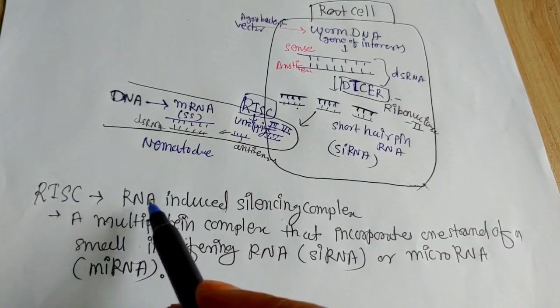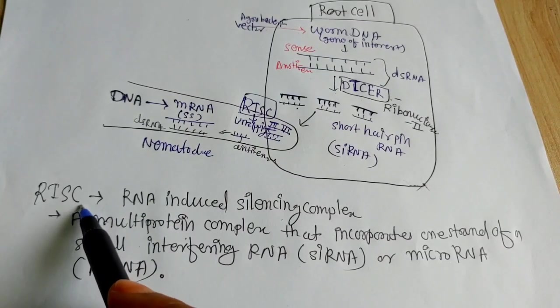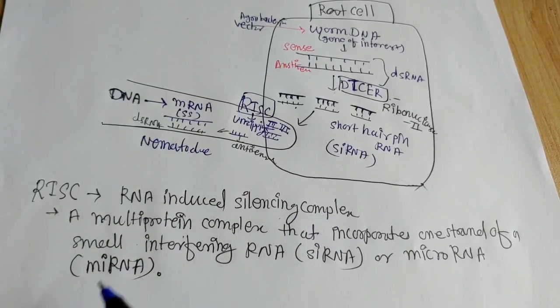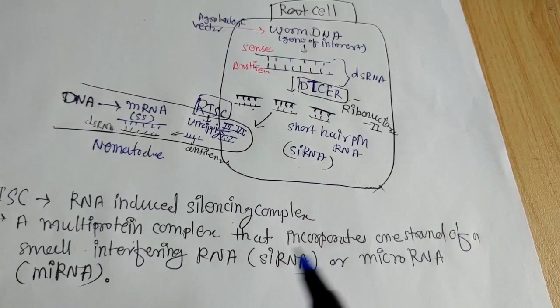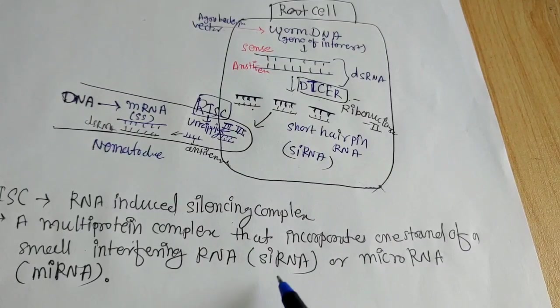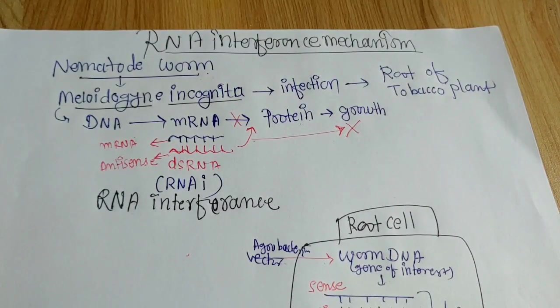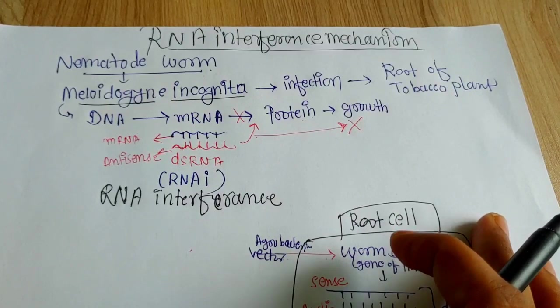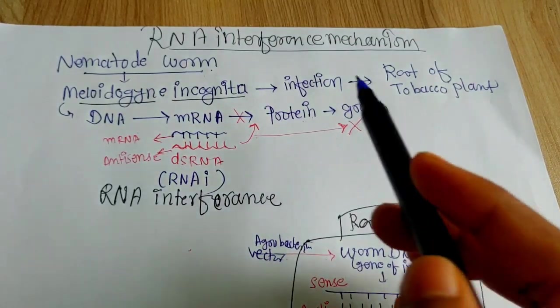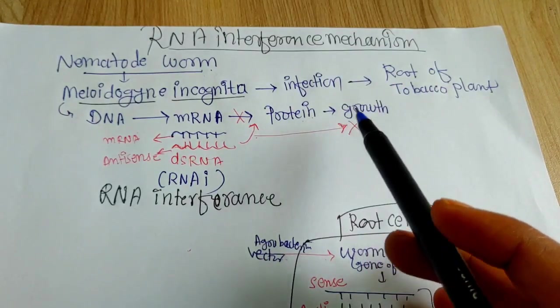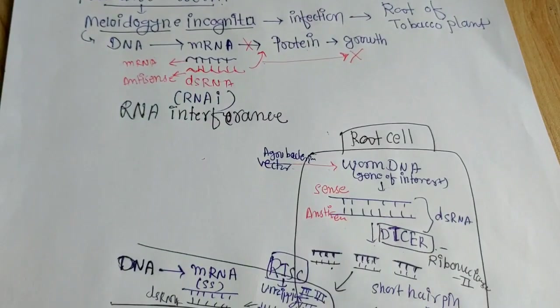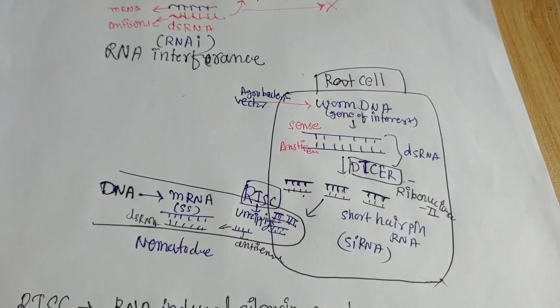And what is RISC? What is the full form of RISC you should know? It is RNA-induced silencing complex, which is a kind of multi-protein complex that incorporates one strand of the small interfering RNA, siRNA or microRNA. So this is how the RNA interference mechanism works. You should know that the RNA interference mechanism is naturally present in all the eukaryotic cells. And this is just a very short example of this mechanism that is being used today to create transgenic plants.